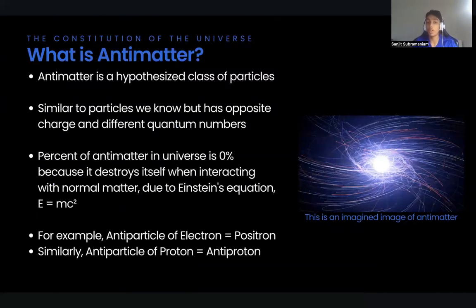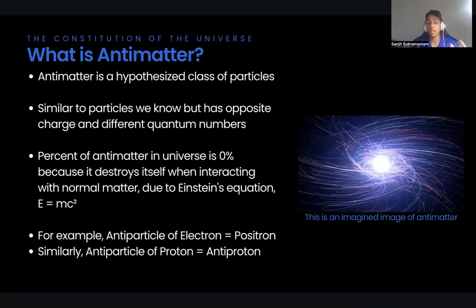Antimatter is a concept in particle physics that refers to particles that have the same mass as the corresponding particles in ordinary matter, but possess opposite electric charge and other quantum numbers. In other words, antimatter is composed of antiparticles. For example, the antiparticle of an electron — a negatively charged subatomic particle — is a positron, which has the same mass as an electron but carries a positive charge.